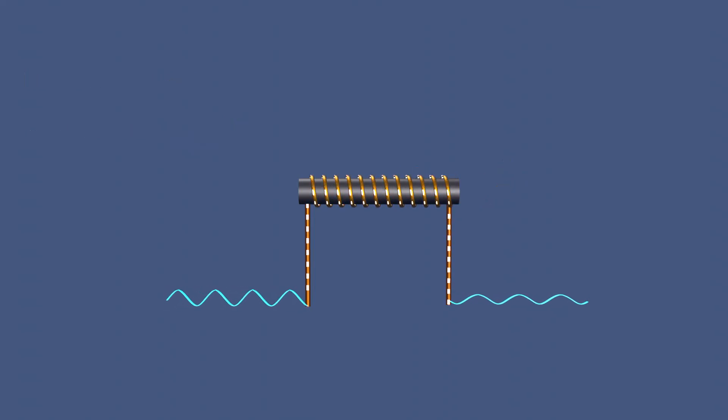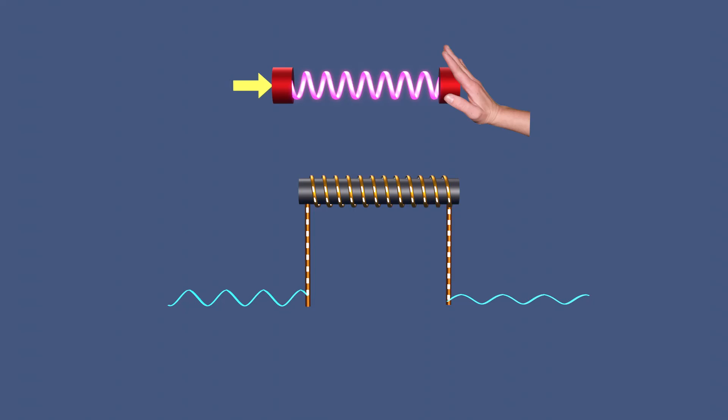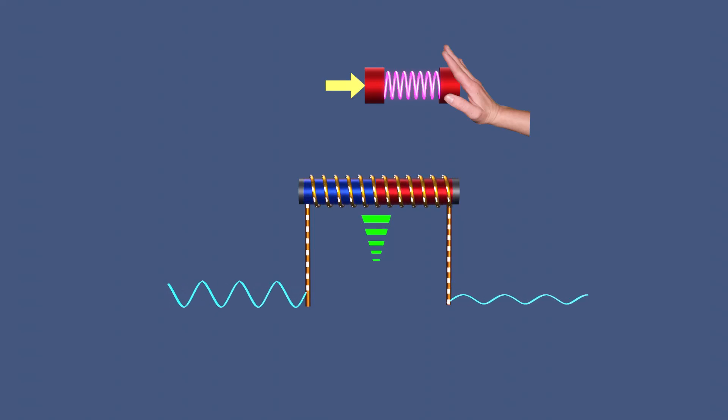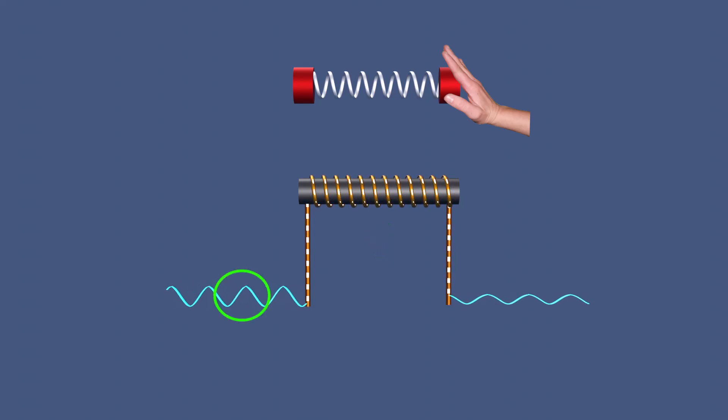A useful analogy for understanding the operation of inductors is to compare them to springs in mechanical systems. Just as a spring resists changes in its length and stores potential energy when stretched or compressed, an inductor resists changes in current and stores energy in its magnetic field. When the force on a spring is removed, it returns to its original state by releasing energy, just as an inductor releases energy when the current decreases.